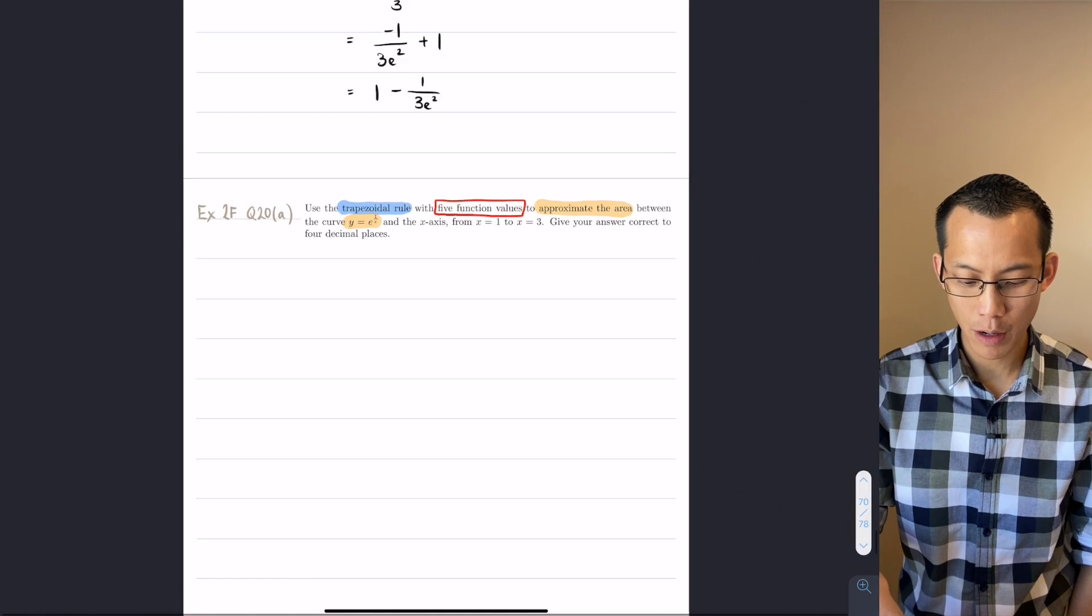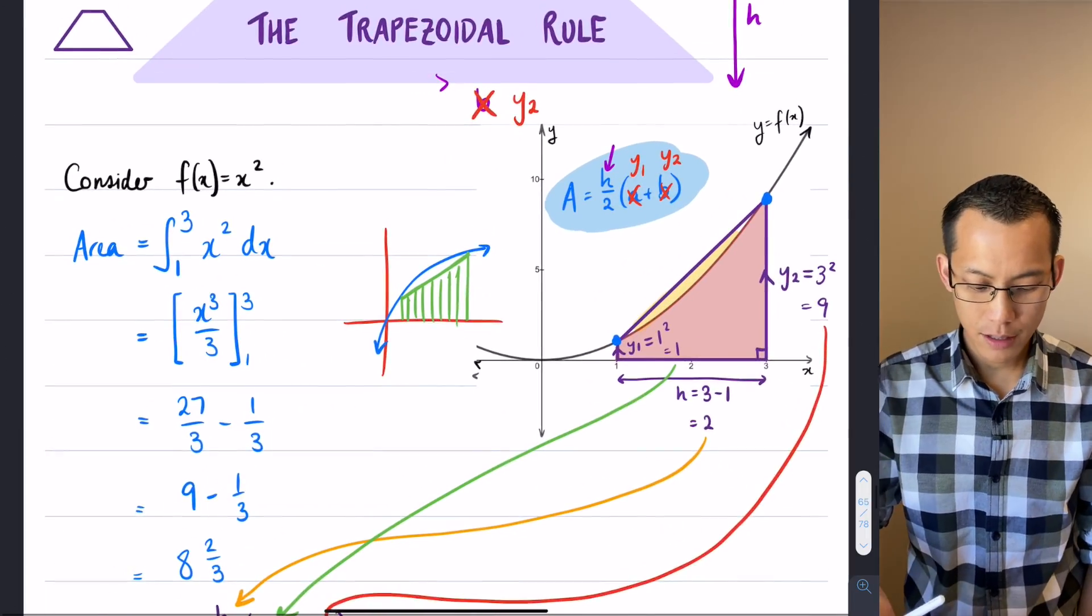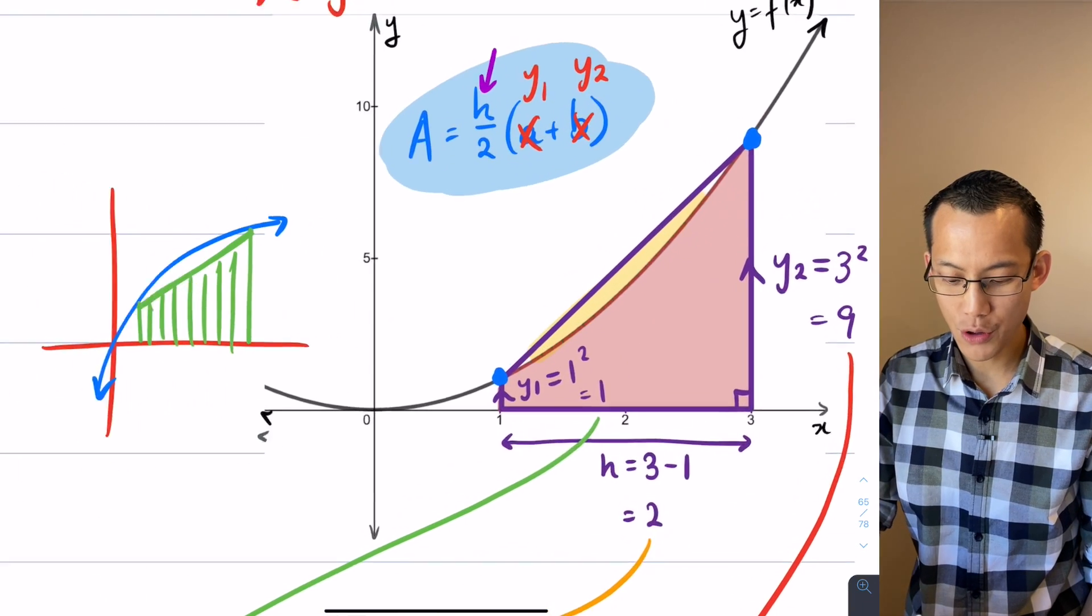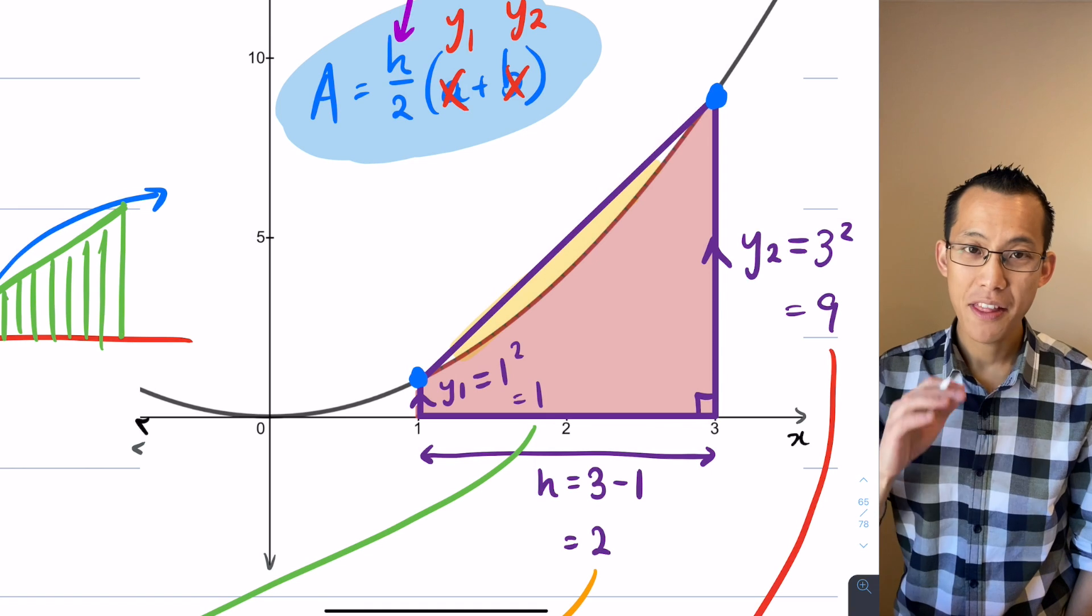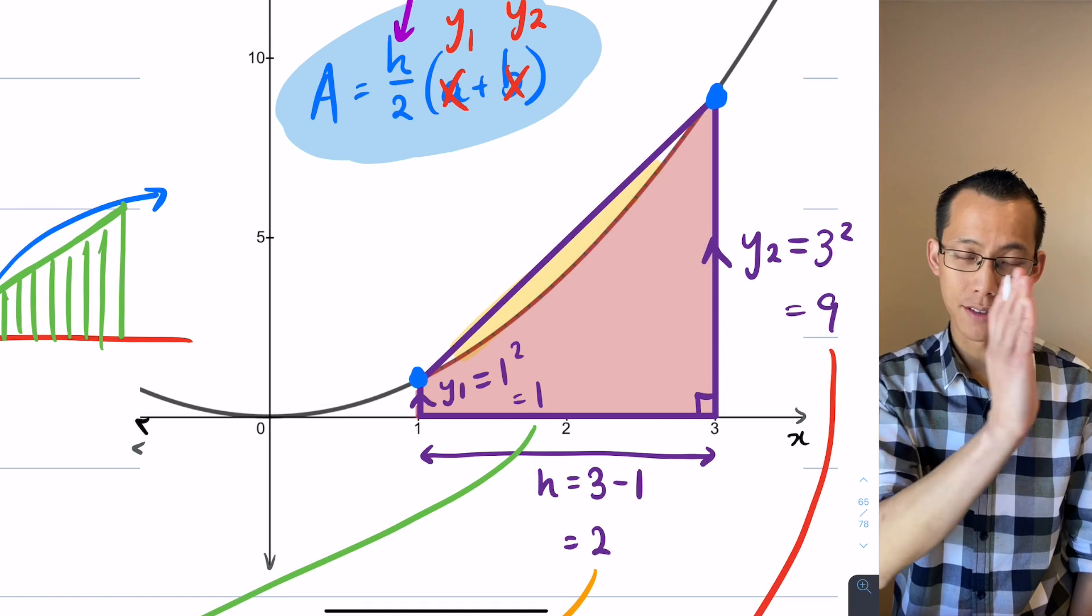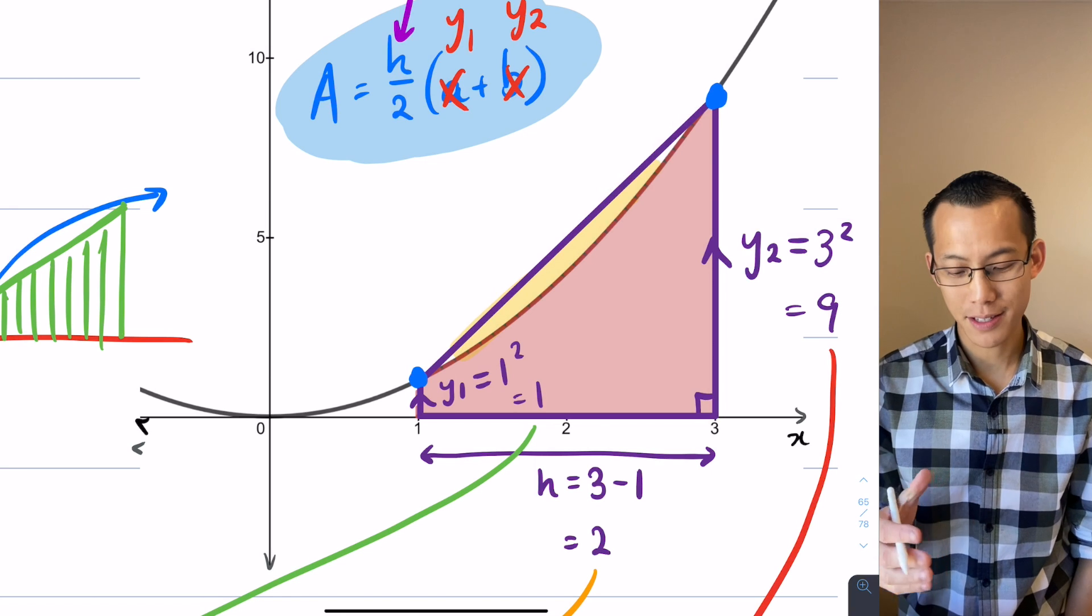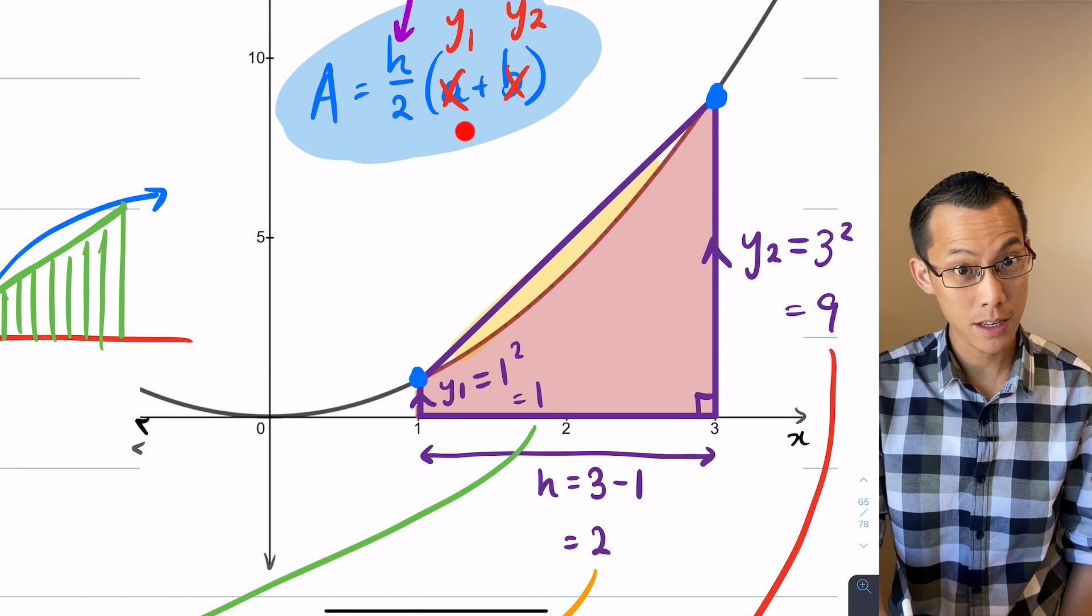Now I want to call your mind back to when we were looking at trapezoidal rule. Let me just dig back into my notes here. Here's the trapezoidal rule right now. Remember what are the function values? When you have a look at the trapezium that you use to approximate the area, the function values are these vertical lines that are parallel to each other.